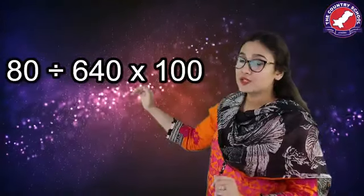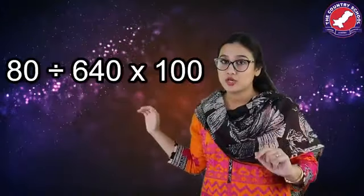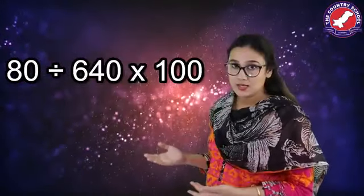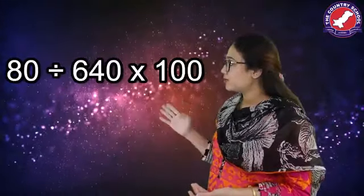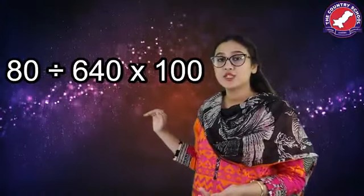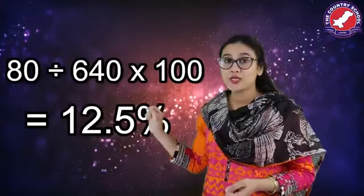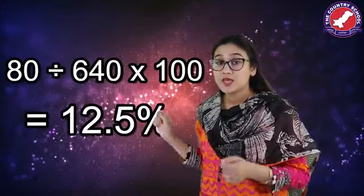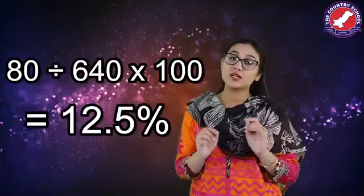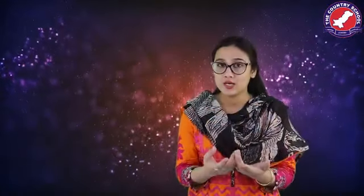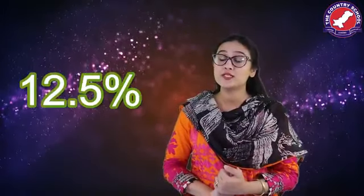Since we have a profit, we write: amount of profit divided by cost price, multiplied by 100. Our profit was Rs. 80 and cost was Rs. 640. So, 80 divided by 640 multiplied by 100 equals 12.5%. This is the percentage of profit he earned on his cost. He invested Rs. 640, earned Rs. 720, made a profit of Rs. 80, which is 12.5%.